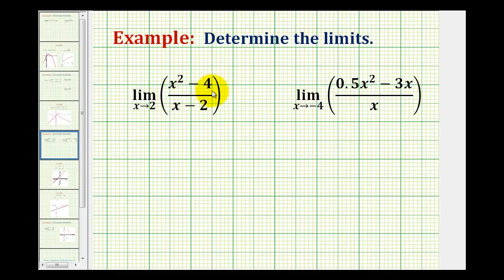But if we notice the numerator is factorable, it will help us evaluate this limit. We can rewrite this as the limit as x approaches 2. Our numerator is a difference of squares, so we'd have x plus 2 times x minus 2 all over x minus 2.